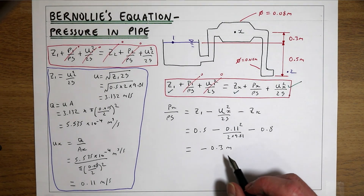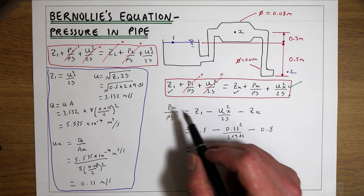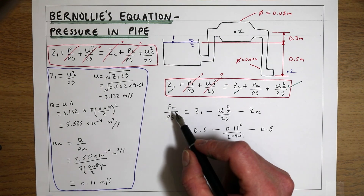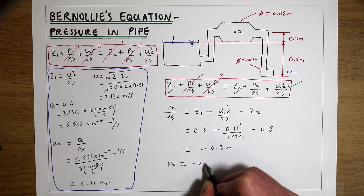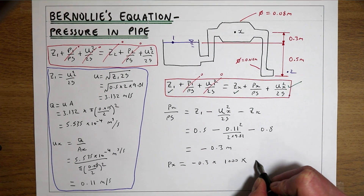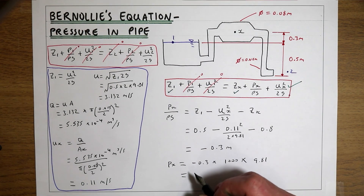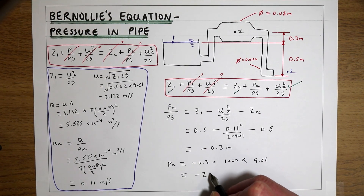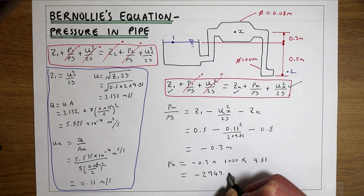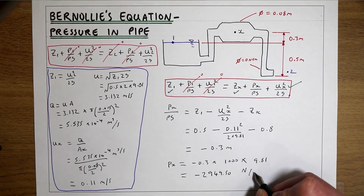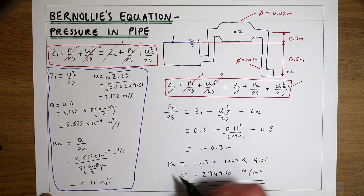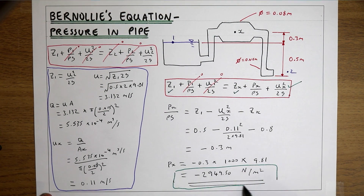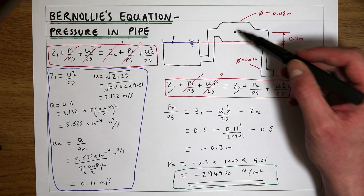As a final step, we convert the pressure head to Newtons per metre squared. Since Px/ρg = h, we have Px = h × ρg = −0.3 × 1000 × 9.81, which gives a final pressure at X of −2,949.5 N/m². So the pressure inside that pipe at X is −2,949.5 N/m², and that's how we apply Bernoulli's equation to find the pressure inside a system like this.